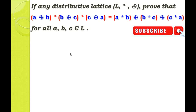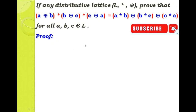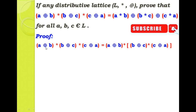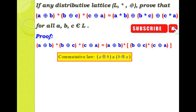So now we consider the left-hand side term: A direct sum B, star B direct sum C, star C direct sum A. Here I am going to use associative law. We use associative law when we want to change any bracket. Using associative law, I am going to put one new bracket for the second and third term. Then using commutative law — A direct sum B equals B direct sum A, otherwise A star B equals B star A.